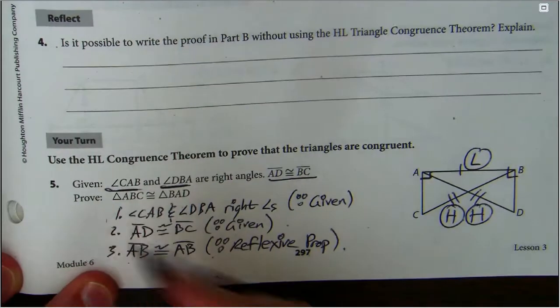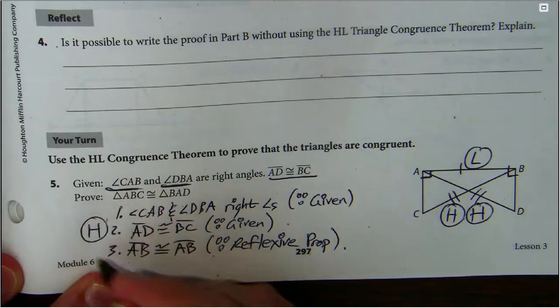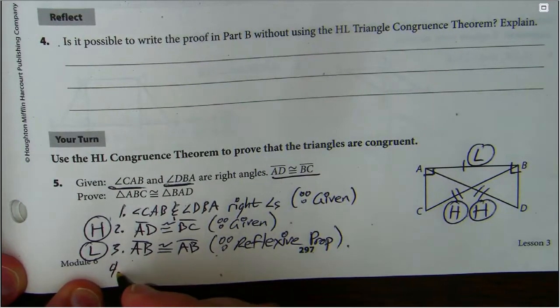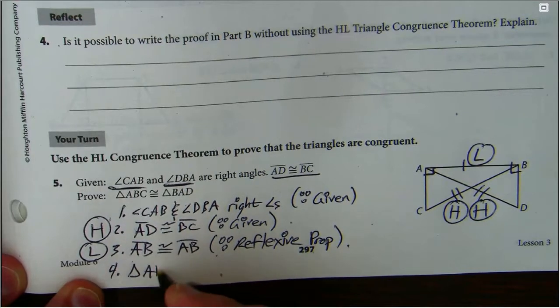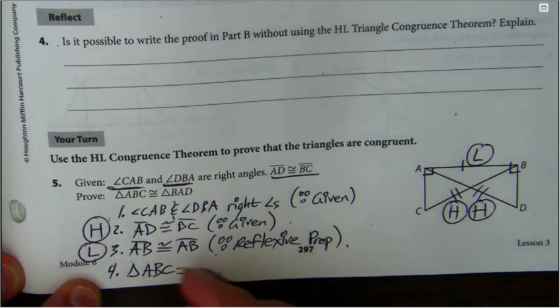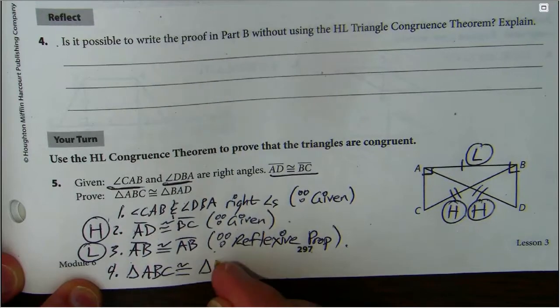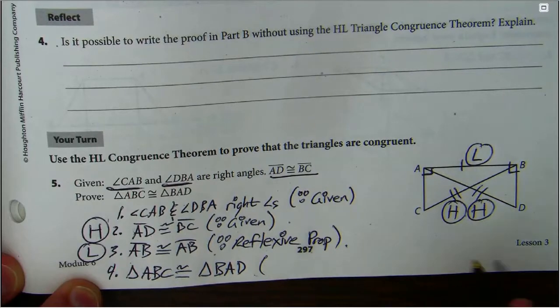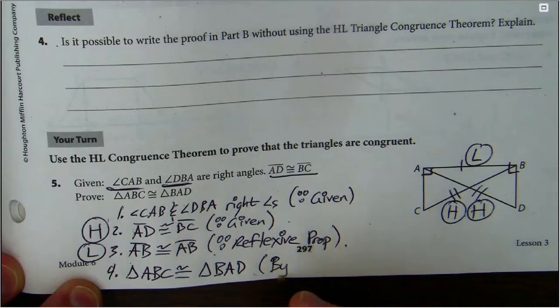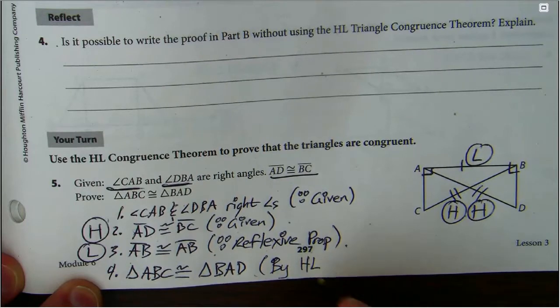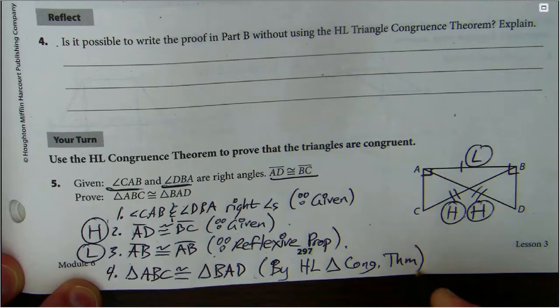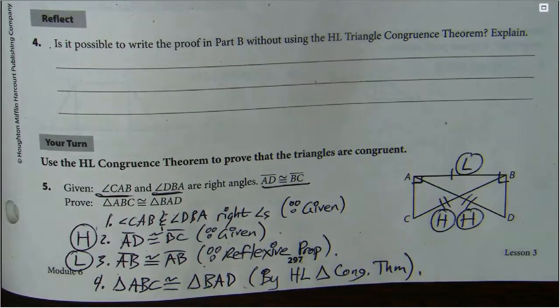That gave us—we had our hypotenuse given, we had our leg given. Since we have right angles, we could use HL. So triangle ABC is congruent to the other triangle, triangle BAD. BAD to the bone. And that's by the HL triangle congruency theorem. Happy? Yes.